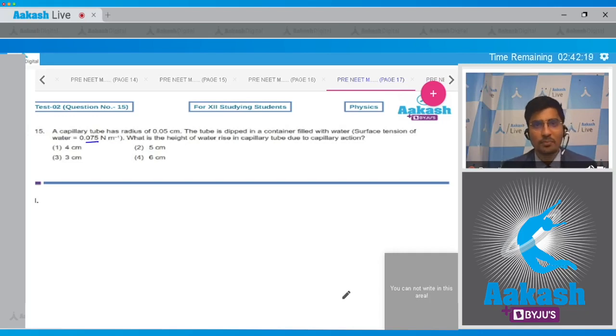The height of the water in the capillary rise is given as 2S cos theta by rho G A, where A is the radius of the capillary tube, theta is the contact angle, S is the surface tension, and rho is the density of the liquid. We can substitute the given values. This will be 2 into 0.075. For water glass interface, the contact angle can be taken to be equal to 0. We divide it by 1000, that is the density of water, G is 9.8, and A is 5 into 10 raised to power minus 4.